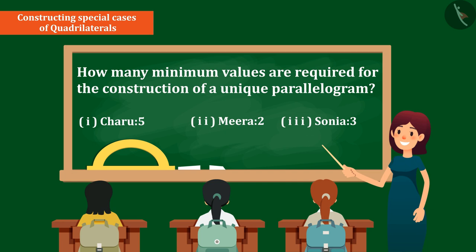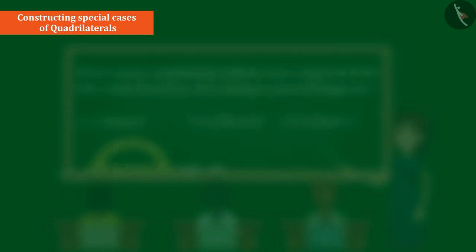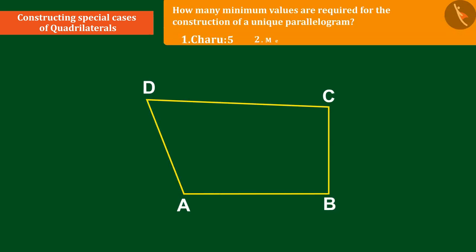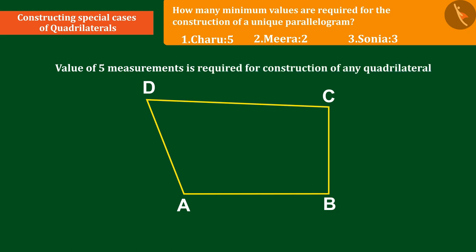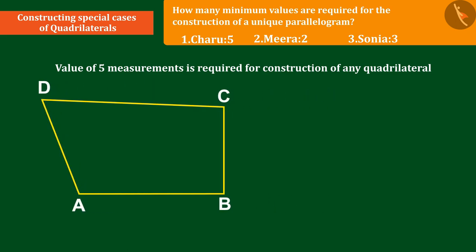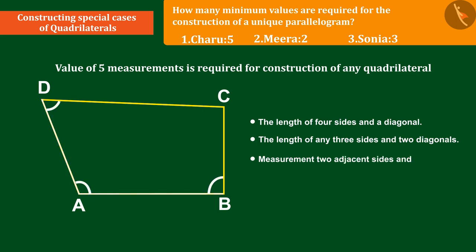So let's see why Charu would have chosen option 1. As we have been reading from the beginning that the construction of any quadrilateral requires the value of 5 measurements which are as follows: length of 4 sides and a diagonal, length of 3 sides and 2 diagonals, measurement of 2 adjacent sides and 3 angles, measured 3 sides and 2 angles between them. Hence, Charu selected option 1 which is the wrong answer.